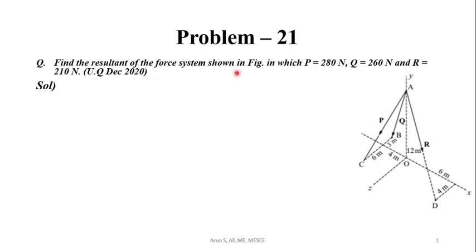Find the resultant of the force system shown in the figure in which P is equal to 280N, Q is equal to 260N and R is equal to 210N. The figure is given, with forces P, Q and R acting along lines AC, AB and AD respectively. We have to find the resultant of this force system.